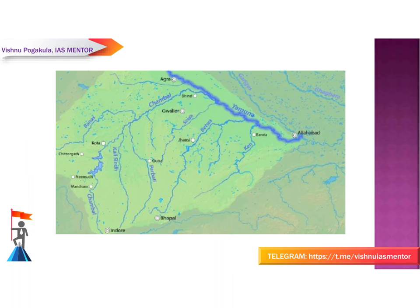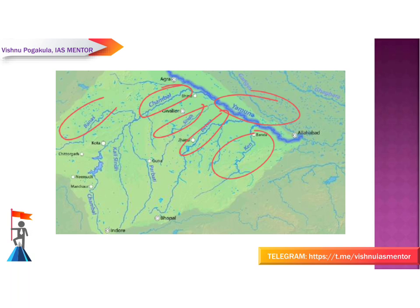To recap the Yamuna and its tributaries: Yamuna, Chambal, Sindh, Betwa, Ken. Chambal itself is further divided into sub-tributaries: Banas, Kali Sindh, and Parbati.